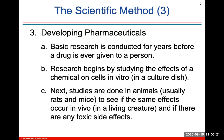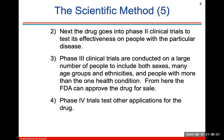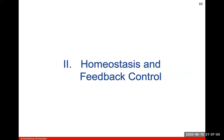Developing pharmaceuticals: basic research for developing a drug takes years before a drug is ever given to a person. Getting a vaccine for COVID is a little scary because it probably should take longer than a couple of months. Research begins by studying the effects of a chemical on cells in vitro, then studies are done on animals. Animal trials could take several years, and eventually phases of clinical trials move on to human volunteers to test for side effects, rates of passage, and dosage.